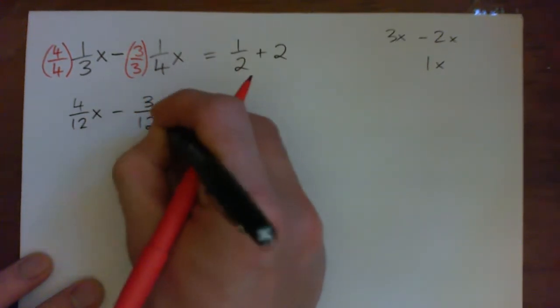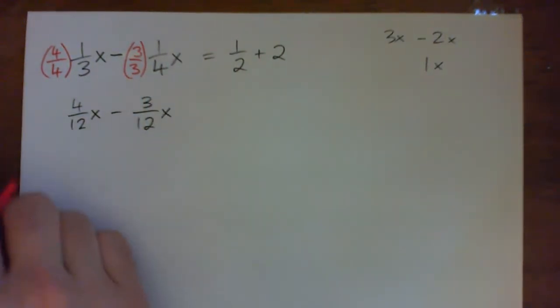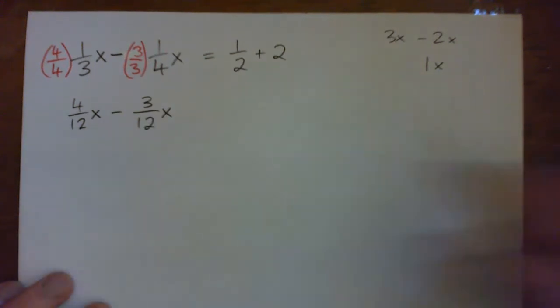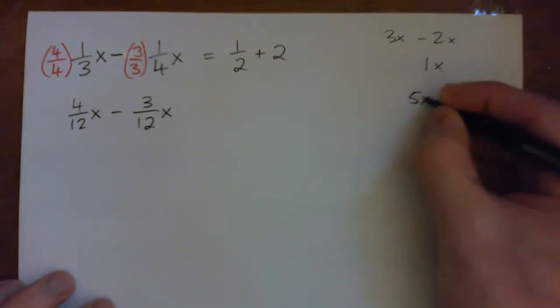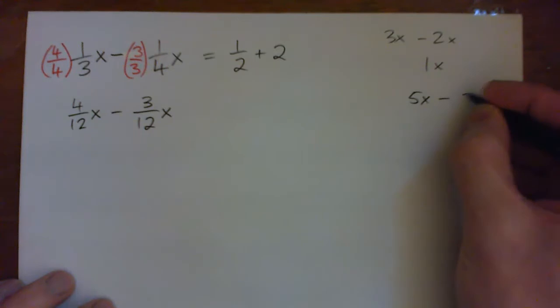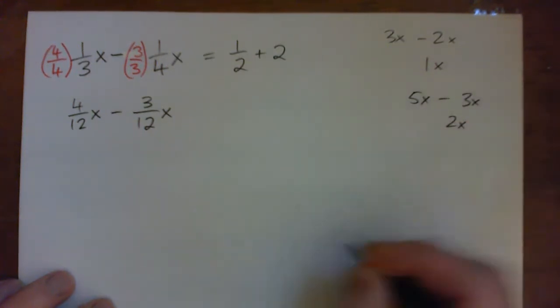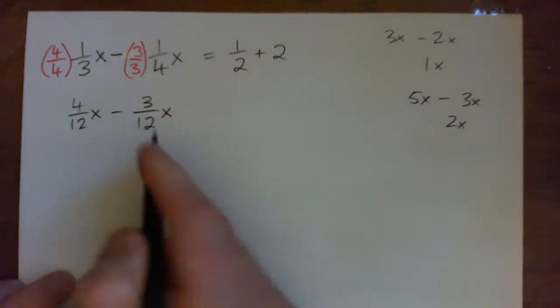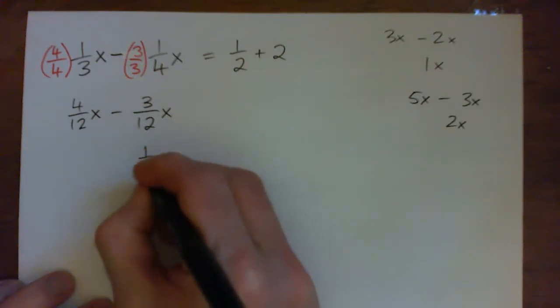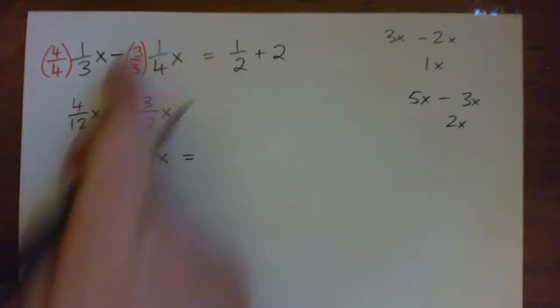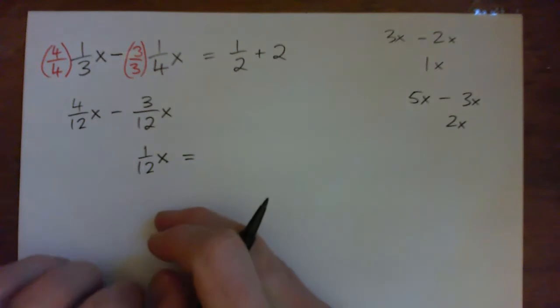Four twelfths x minus three twelfths x is just like doing five x minus three x, you get two x. So four twelfths minus three twelfths is one twelfth. We have one twelfth x on the left, and that's probably the part you might have got stuck on.